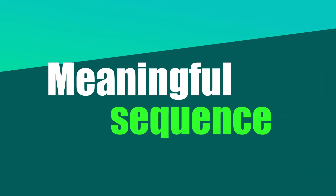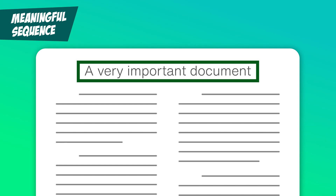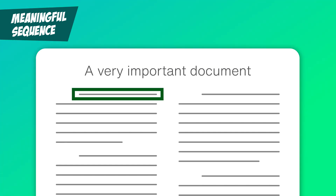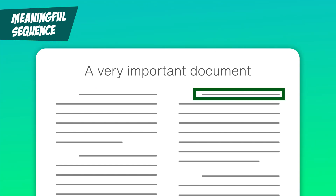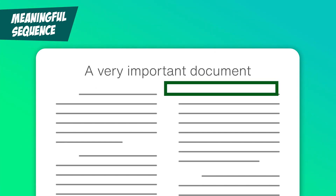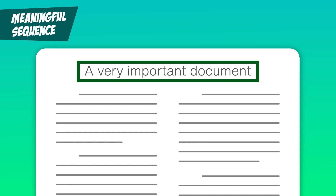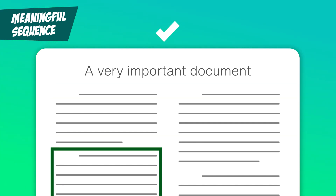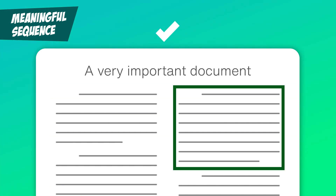Meaningful Sequence. Think of a document with two columns of text — it really shouldn't just read straight across the top line, should it? Websites and PDFs need to present information in a logical order. You can check this for web pages by turning off the CSS in your browser.